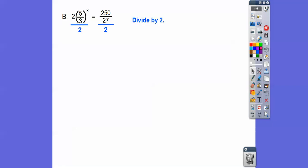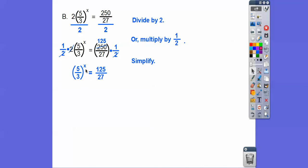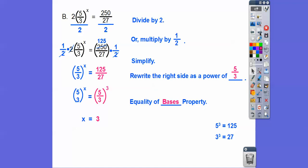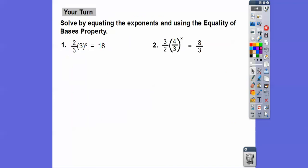So let's do that with this one here. So the book suggests to divide both sides by 2. But since we're dealing with this fraction over here, dividing by 2 is the same as multiplying by a half. So then the 2s cancel right there. And we get 5 thirds to the x equals 125 over 27. This is 5 to the 3rd. This is 3 to the 3rd, or it's 5 thirds to the 3rd. So now we got 5 thirds to the x equals 5 thirds to the 3rd. So x equals 3 by the equality of bases property.